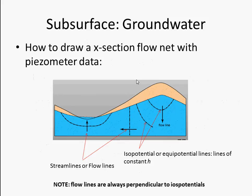Here's a summary of what we just saw. These lines are isopotentials or equal potential lines — just lines of constant hydraulic head. Then we draw streamlines or flow lines perpendicular to these lines of constant hydraulic head.